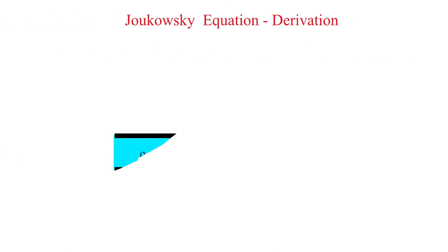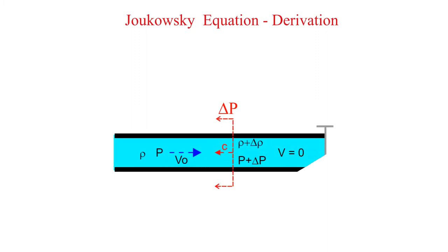Now let's look at conditions following an instantaneous closure of the valve. A pressure wave shown in red is traveling to the left with a magnitude denoted as delta p. It is moving at the sonic velocity for the water in the pipe. The sonic velocity is often called the celerity and is denoted with a c.